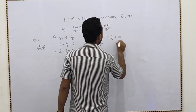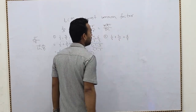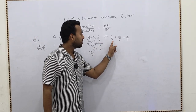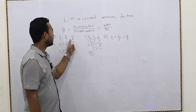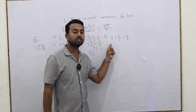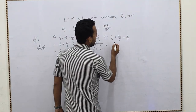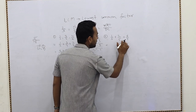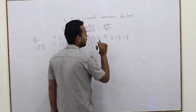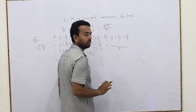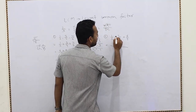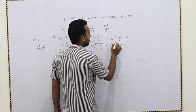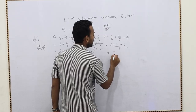The next example is 1/5 + 2/5 + 6/5. Here you can see the denominator is the same in all three. The difference from the first question is that all denominators are the same, making it very easy. When denominators are the same, the LCM is that same number. We simply write the numerators as they are: 1 + 2 + 6 = 9, giving us 9/5.